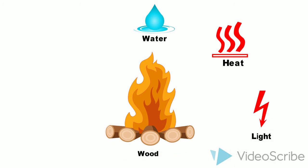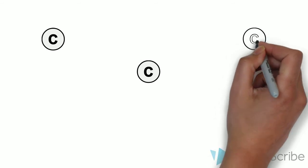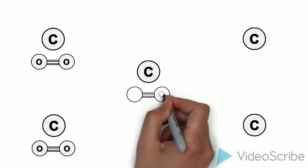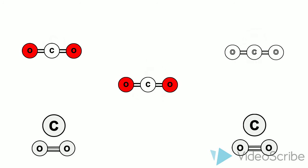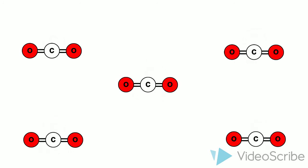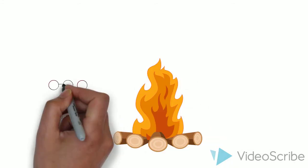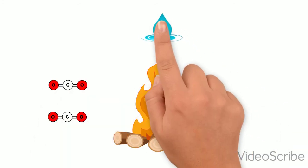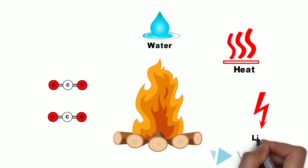when wood burns in air. The carbon present in the wood reacts with the oxygen present in the air, releasing carbon dioxide and water, along with heat and light.